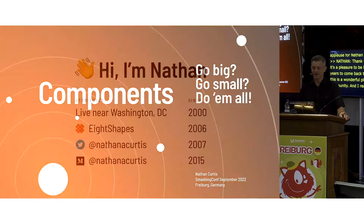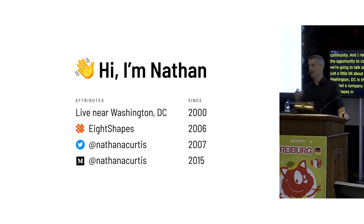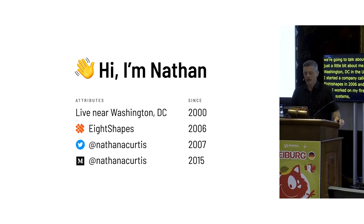We're going to talk about components, but just a little bit about me beforehand. I come from Washington, D.C. in the United States. I started a company called Eight Shapes in 2006, and that was the year I worked on my first — what we now call design systems — at Sun Microsystems. You can find me on Twitter, and in particular I do a lot of writing on Medium, where you'll see content like this.